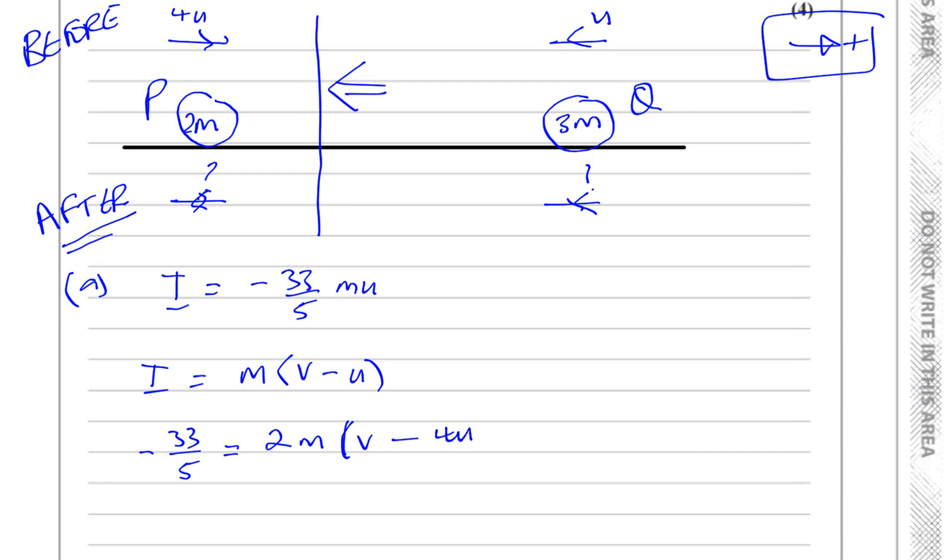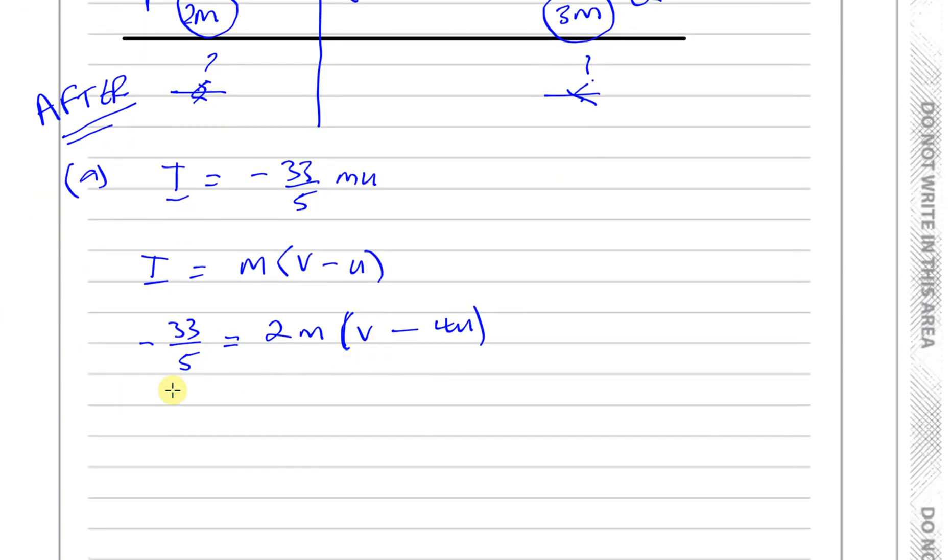And the speed before collision is positive 4u. So we are able to now solve this problem. If we just expand this, you've got minus 33 over 5 mu equals 2m times V. We could get rid of the m's and divide both sides by 2 as well. So we have minus 33u over 10 equals V minus 4u.